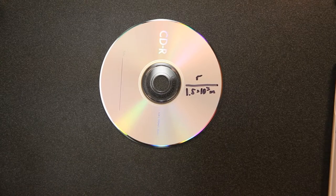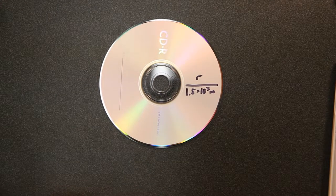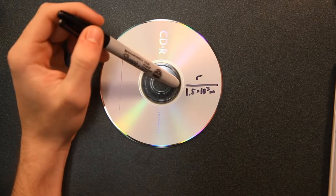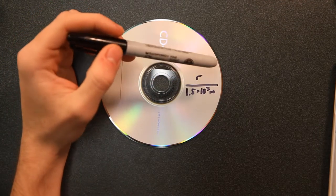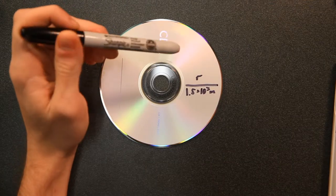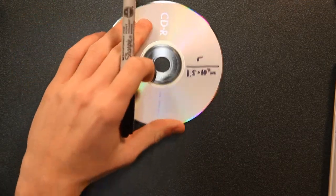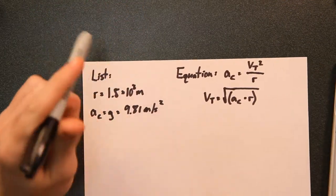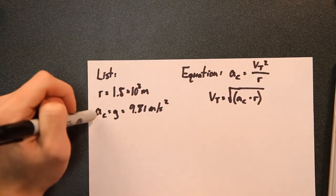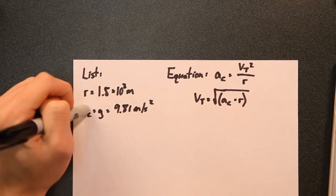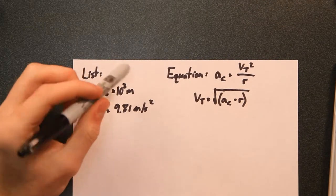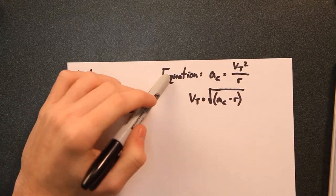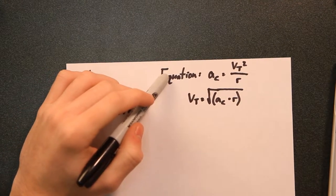So the example we did in class basically gave you a radius of the dock of 1.5 times 10 to the third meters. So what we're going to go ahead and do here, since we're trying to achieve gravity, which is 9.81 meters per second squared, we're going to use our equation for centripetal acceleration to see how fast this would have to go to give us that value.